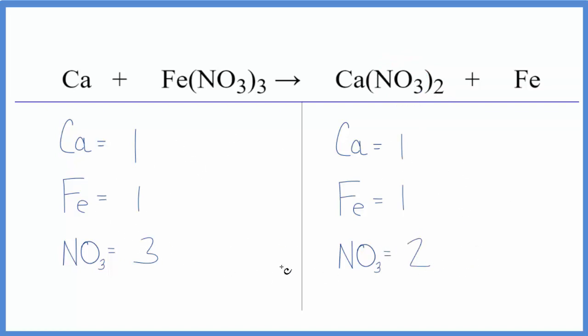I can see right away I probably need to get this to be an even number, so I'm going to put a two here. One times two, that'll give me two iron atoms. And then for the nitrate, I have three times one, so three nitrates times two, that'll give me six.